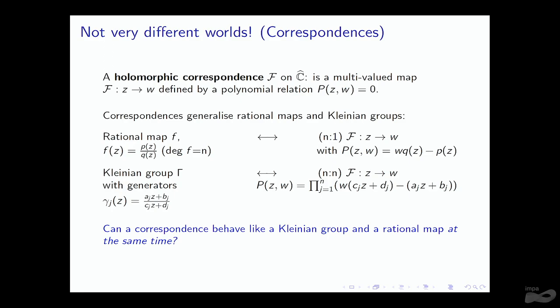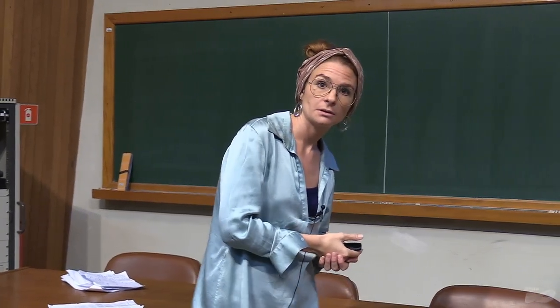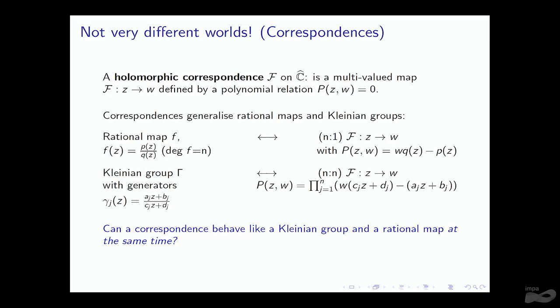Correspondences generalize both rational maps and Kleinian groups. If we have a rational map f(z) = p(z)/q(z), we can write it as an n-to-1 correspondence by taking the polynomial p(z,w) = w·q(z) − p(z). On the other hand, if we have a Kleinian group with n generators, we can write it as an n-to-n correspondence. In particular, we can write the modular group as a 2-to-2 correspondence because it has two generators.